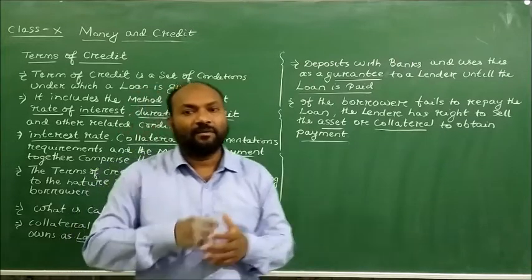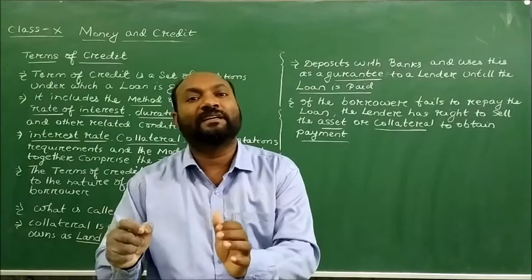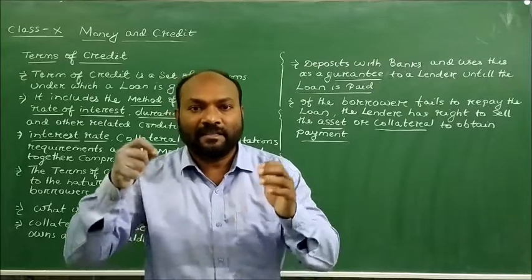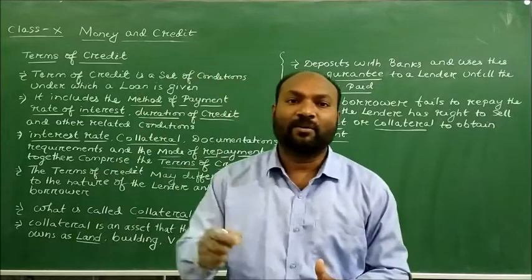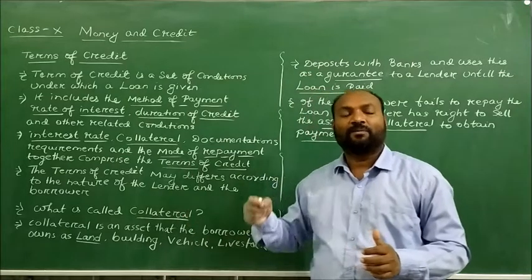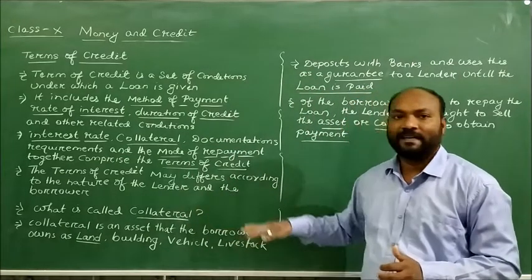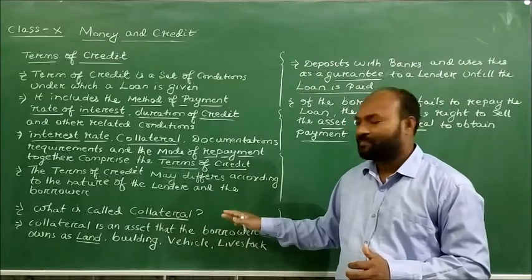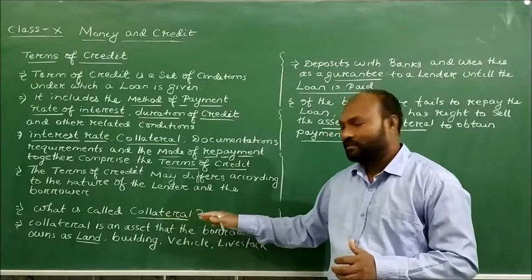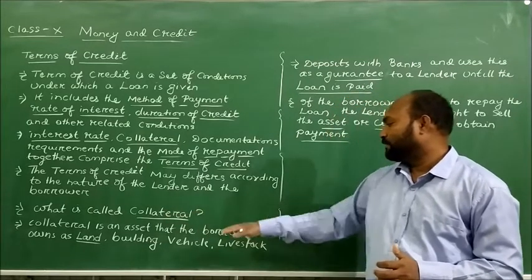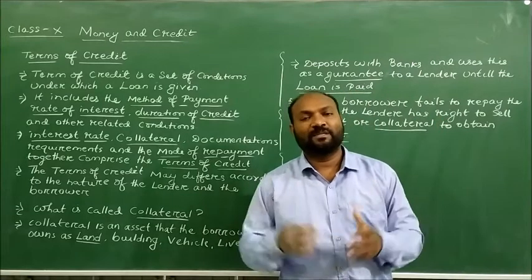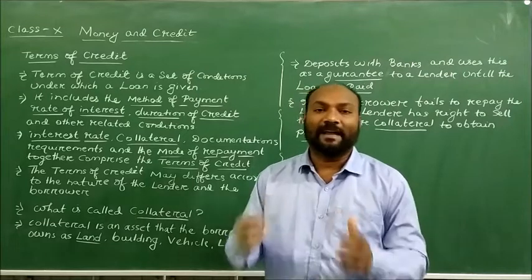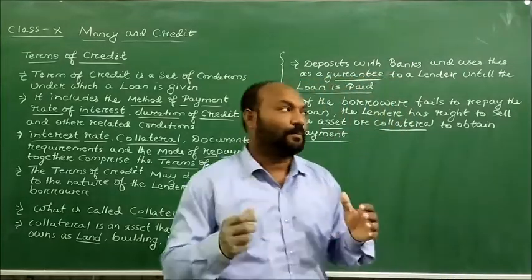We produce collateral as a security to the lender, and the lender, when they receive the collateral, then only they provide the loan. The assets — land, building, vehicle, livestock, and deposits with the bank — are what the borrower provides to the lender as a security deposit.